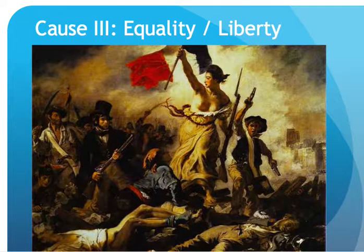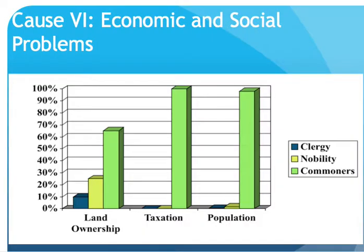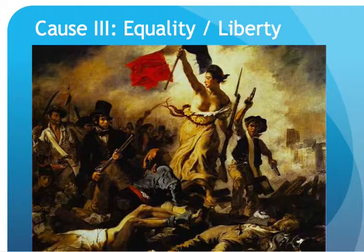The idea of equality and liberty is absolutely central to the French Revolution. The easiest way to think about why there was a need for equality and liberty in France is to look at this graph, which shows land ownership, taxation, and proportion of the population of the three estates. The first estate is in blue, the second estate in yellow, and the third estate in green. Though land ownership is largely concentrated in the clergy and nobility, if you look at the taxation and population, the third estate is 95% of the population and pays 100% of the taxes in France — and that is an unfair system that drives the demand for equality and liberty.